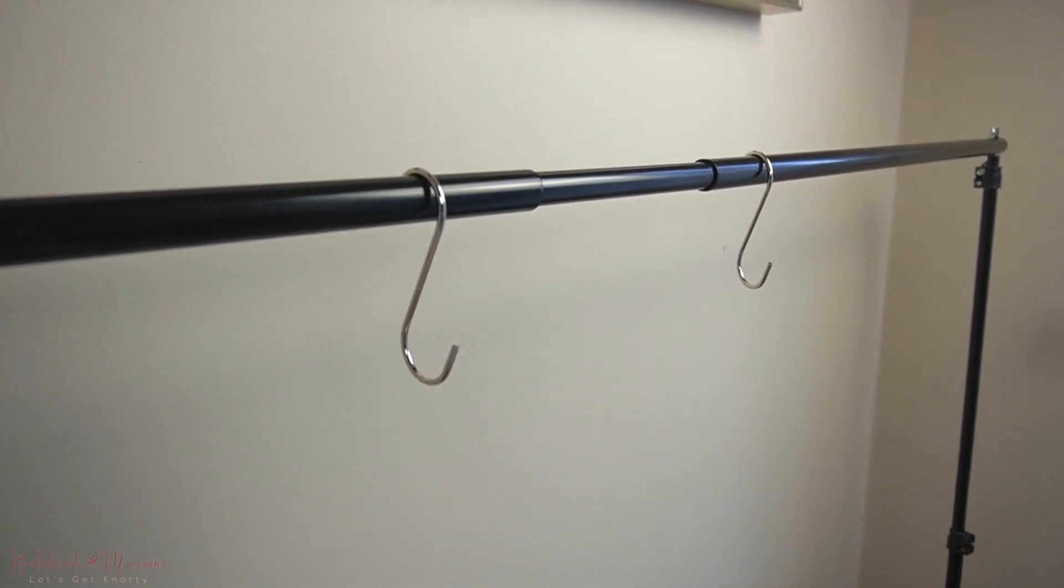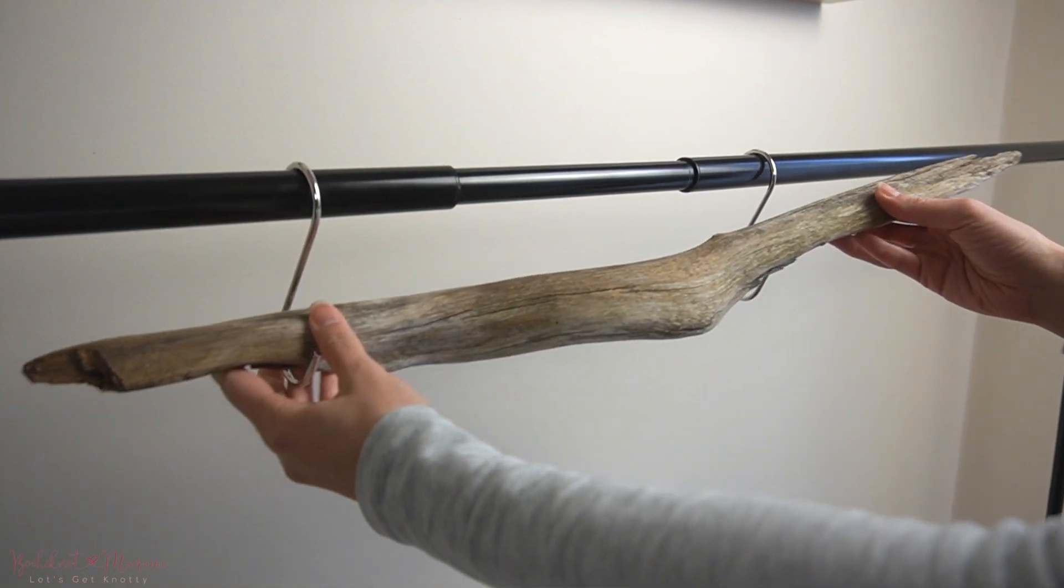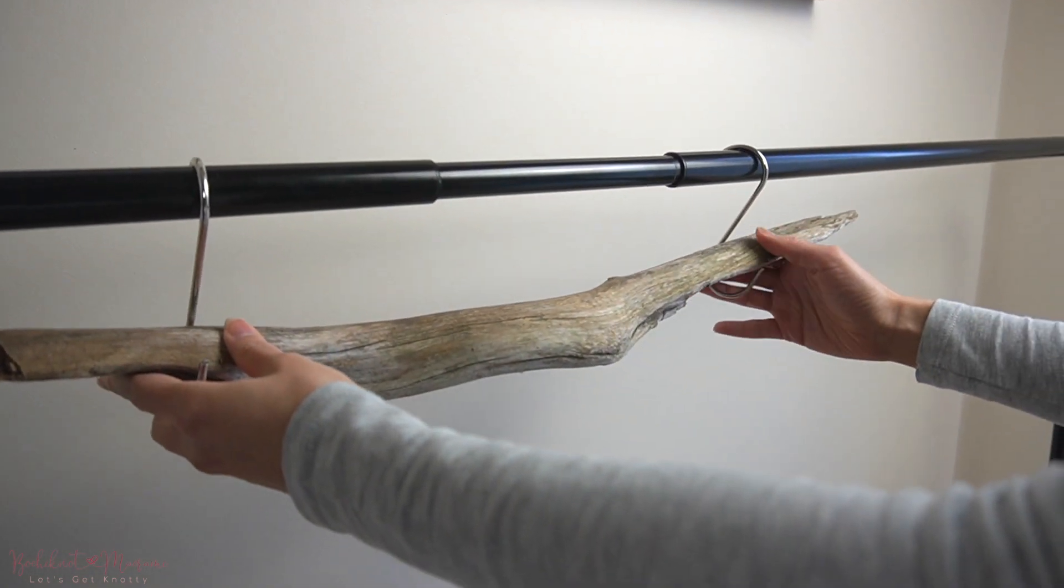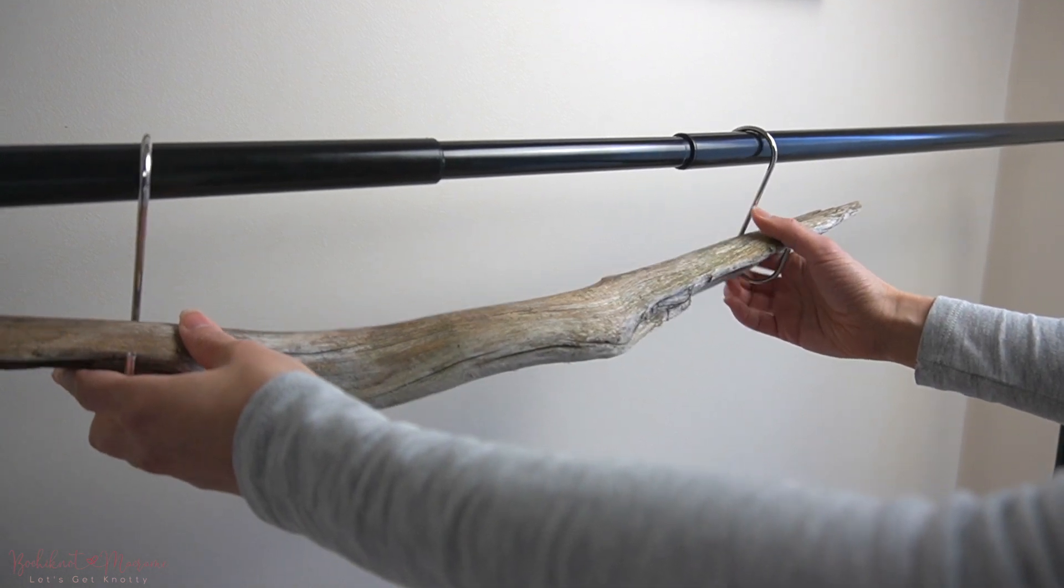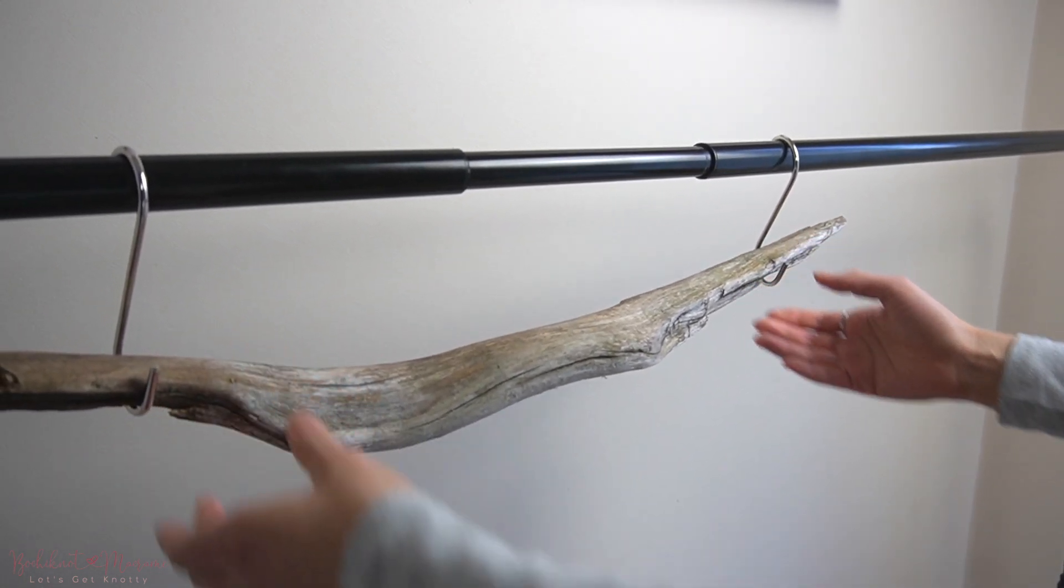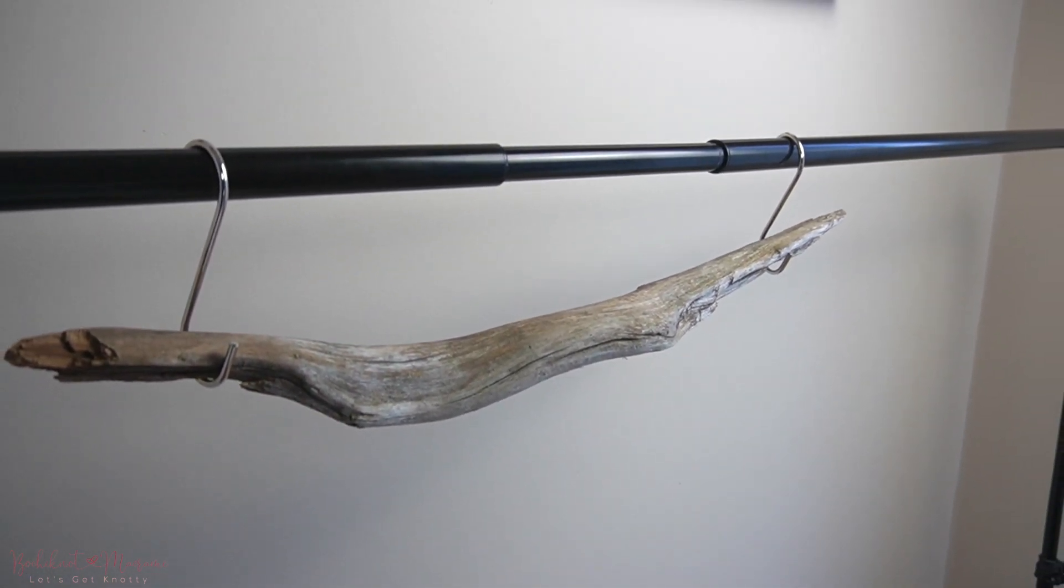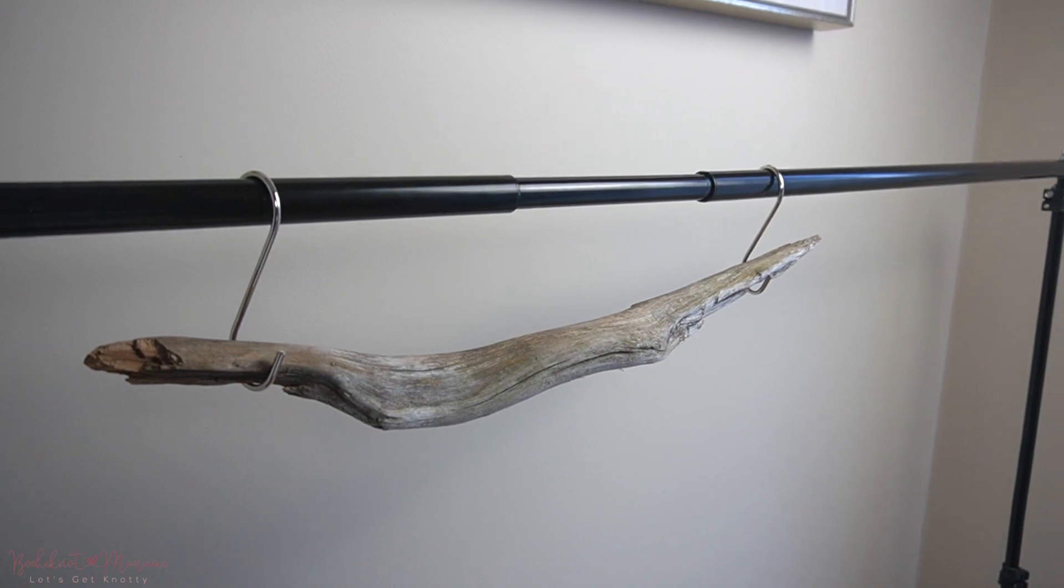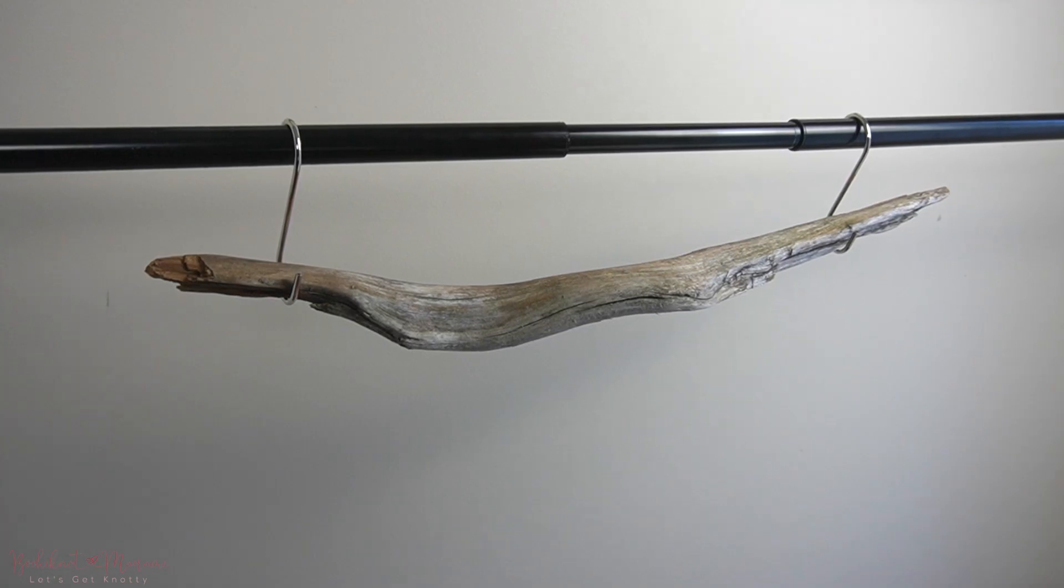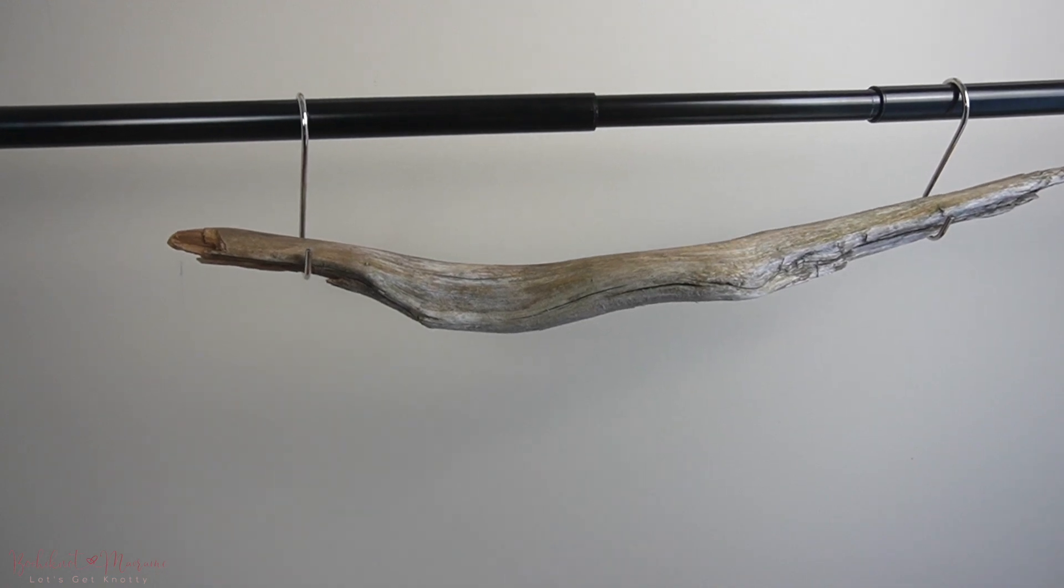I have a photo backdrop stand that I use to hang up my wooden dowels or pieces of driftwood to work on my projects from. You can get a clothing rack for a fairly decent price and I'll post a link to that in the video description below. But alternatively, if you don't want to buy a rack right away, you can use a wall hook to hang up your pattern and work from there.